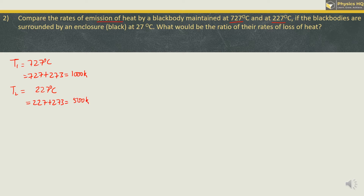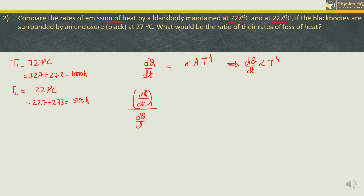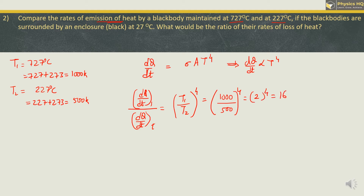Now to compare the rates of emission: the formula is dQ/dt = σ·A·T⁴. So dQ/dt is directly proportional to T⁴. Comparing the two temperatures: (dQ/dt)₁ / (dQ/dt)₂ = (T1/T2)⁴ = (1000/500)⁴ = 2⁴ = 16. So the ratio is 16:1.